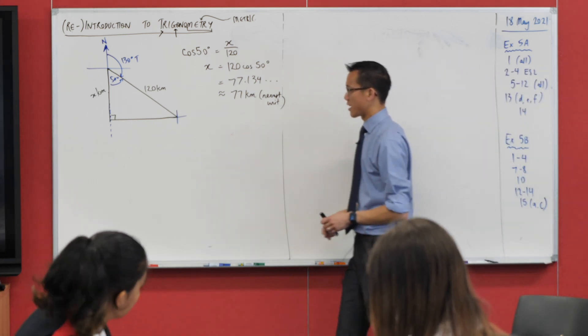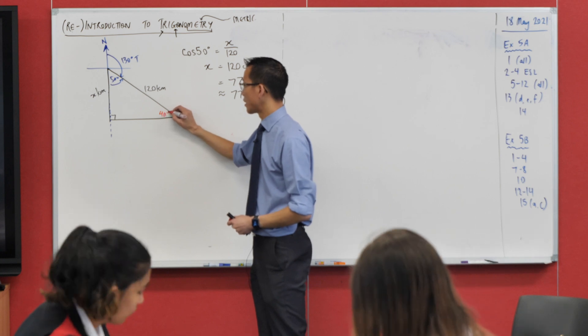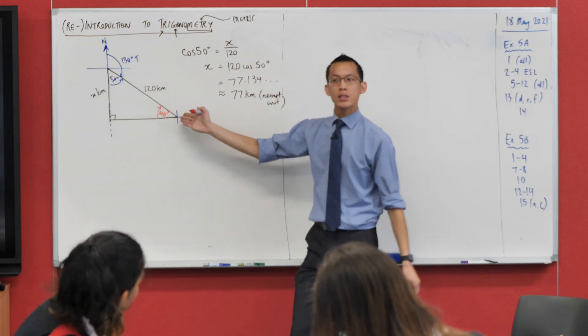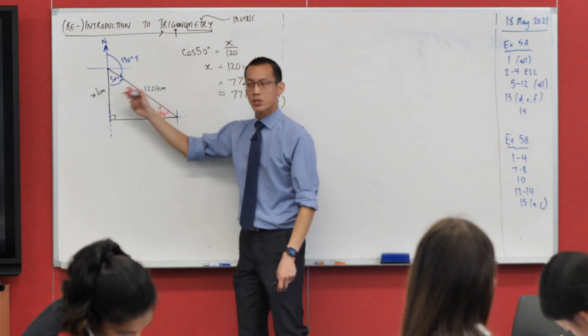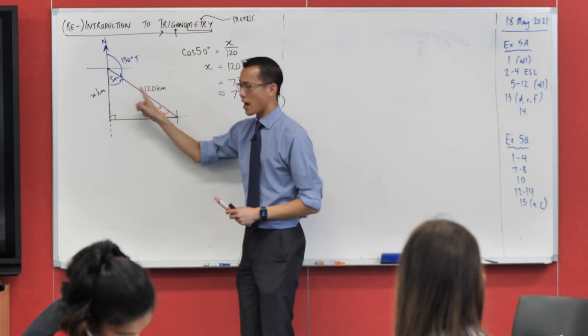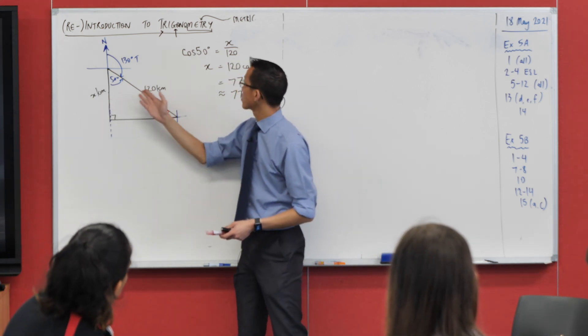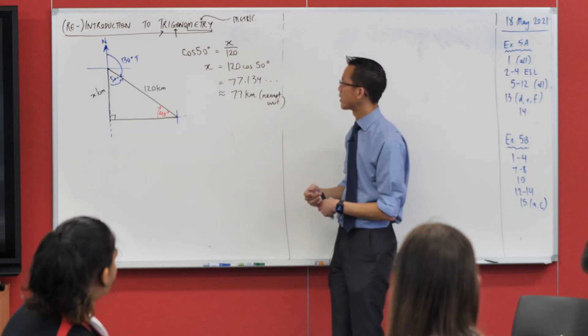Just as an interesting exercise, of course, you can work out this other angle in here to be 40, and I guess if that was the one that we worked out, we would use a different ratio altogether, wouldn't we? We wouldn't use cos, what would we use? Opposite or hypotenuse is going to give me sine, so sine of 40 degrees should be x on 120, and then off you go, okay?